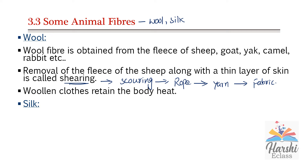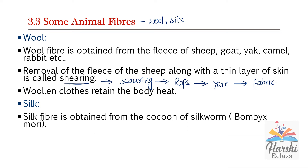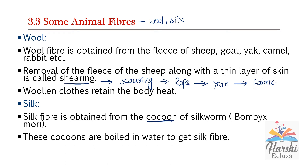The next animal fiber is silk. Silk fiber is obtained from the cocoon of silkworm. The scientific name of silkworm is Bombyx mori. These cocoons are boiled in water to get silk fiber.